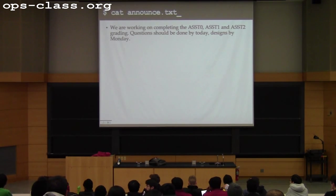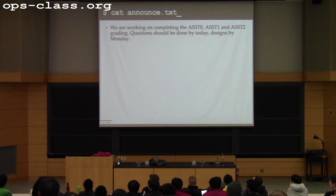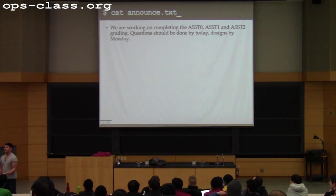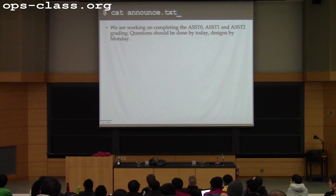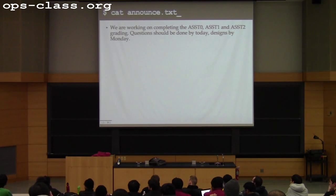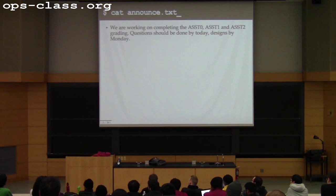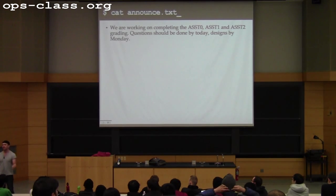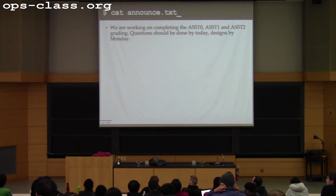One thing I want to point out about the design document grading is that when you receive your grades, the rubric is really designed to evaluate whether or not you've completed the portions of the design we asked you to do — not whether those portions were correct. For example, it says did you talk about wait and exit? You'll probably get points if you talked about it, even if you said something totally crazy about how you're going to implement them. If you want feedback on your approach, bring it to office hours, talk to the TAs, or post it on Piazza.